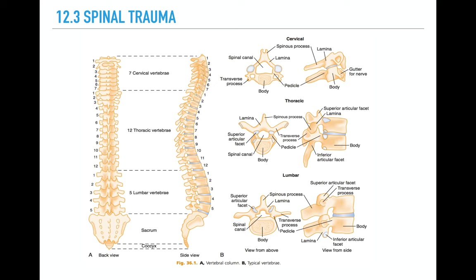This is just a picture of the spinal vertebrae. There's seven cervical, 12 thoracic and five lumbar. If you just think of meal times, that'll help you remember the number. So 7am have breakfast, 12pm lunchtime and 5pm is an early dinner.